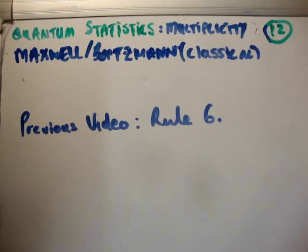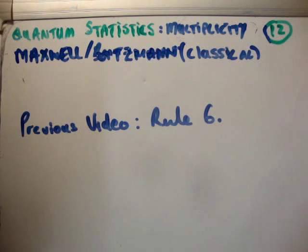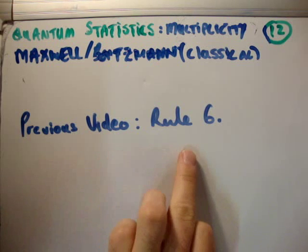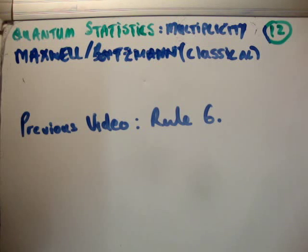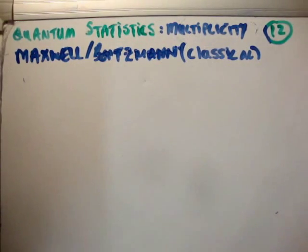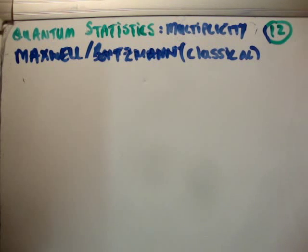Okay, in this video I'm going to continue my tutorials in quantum statistics. This is tutorial number 12. We're talking about the multiplicity for Maxwell-Boltzmann distribution, which is also the classical multiplicity. The previous video was rule number 6 for calculating multiplicities. Now we're getting on to something very useful. Once we've calculated the multiplicity, we're able to calculate the actual distribution functions themselves. We need three occupancy functions, and this will be the first function.